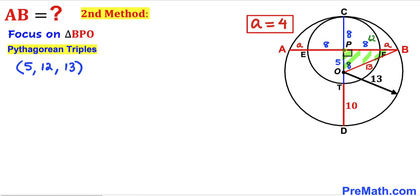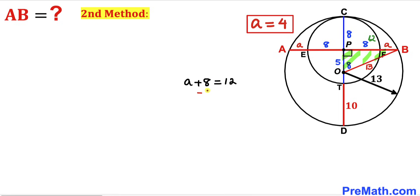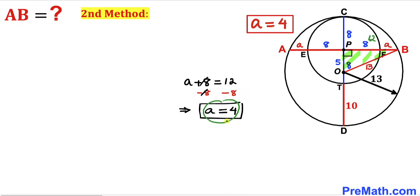Since BP equals a plus 8, we write a plus 8 equals 12. Subtracting 8 from both sides gives a equals positive 4 units — confirming the same result as the first method.